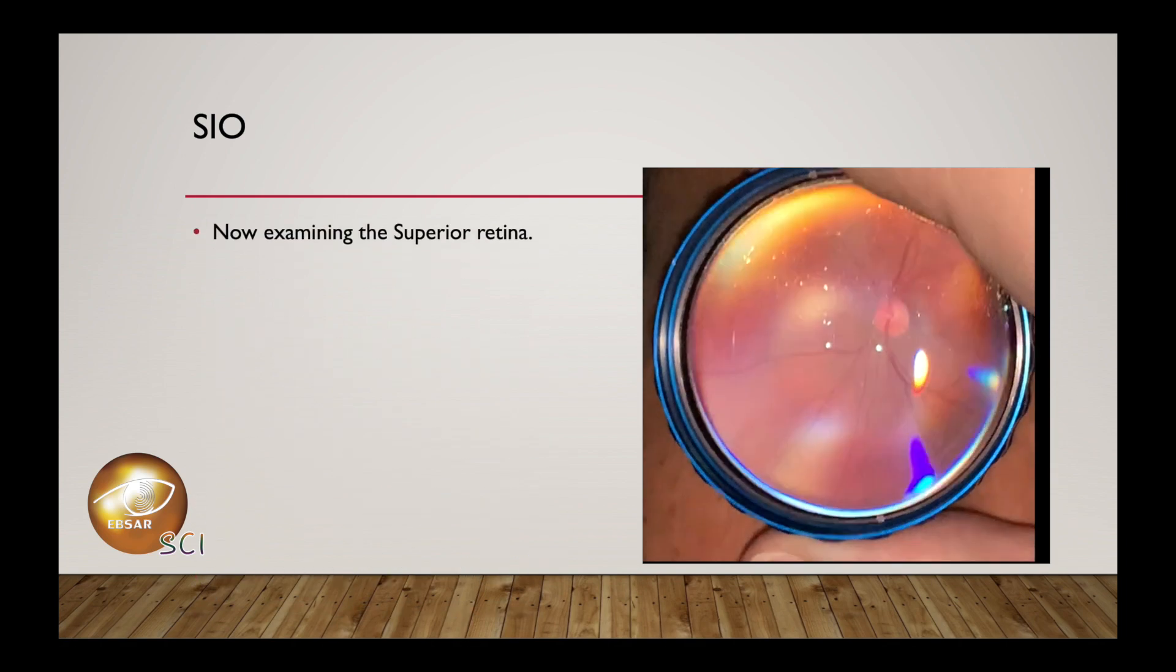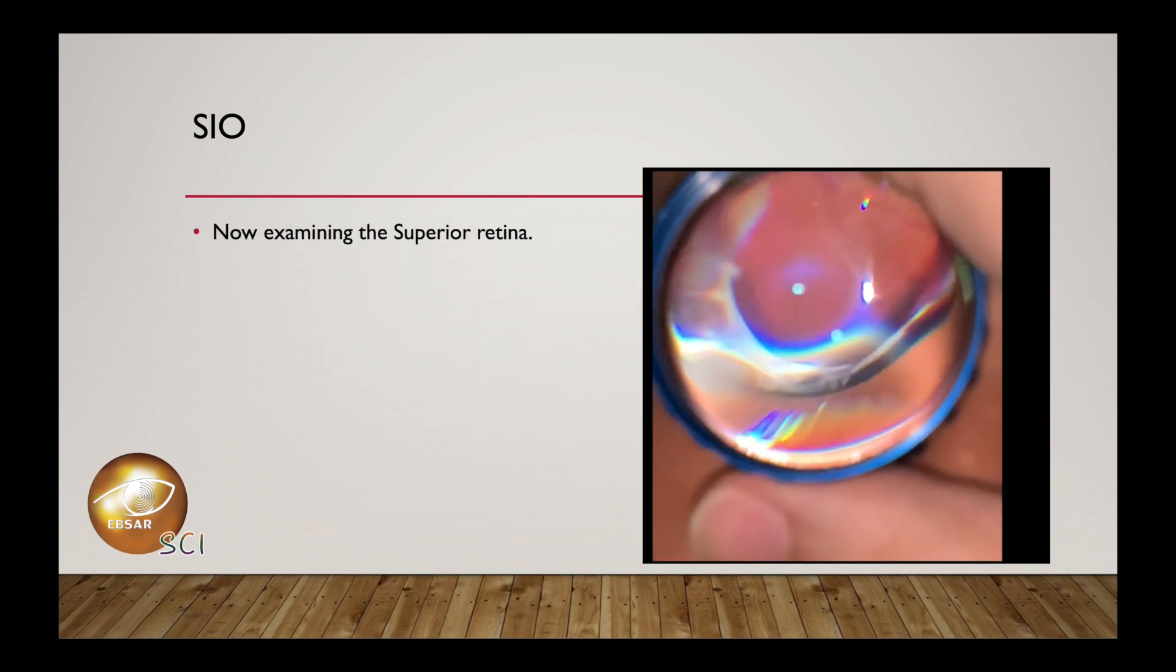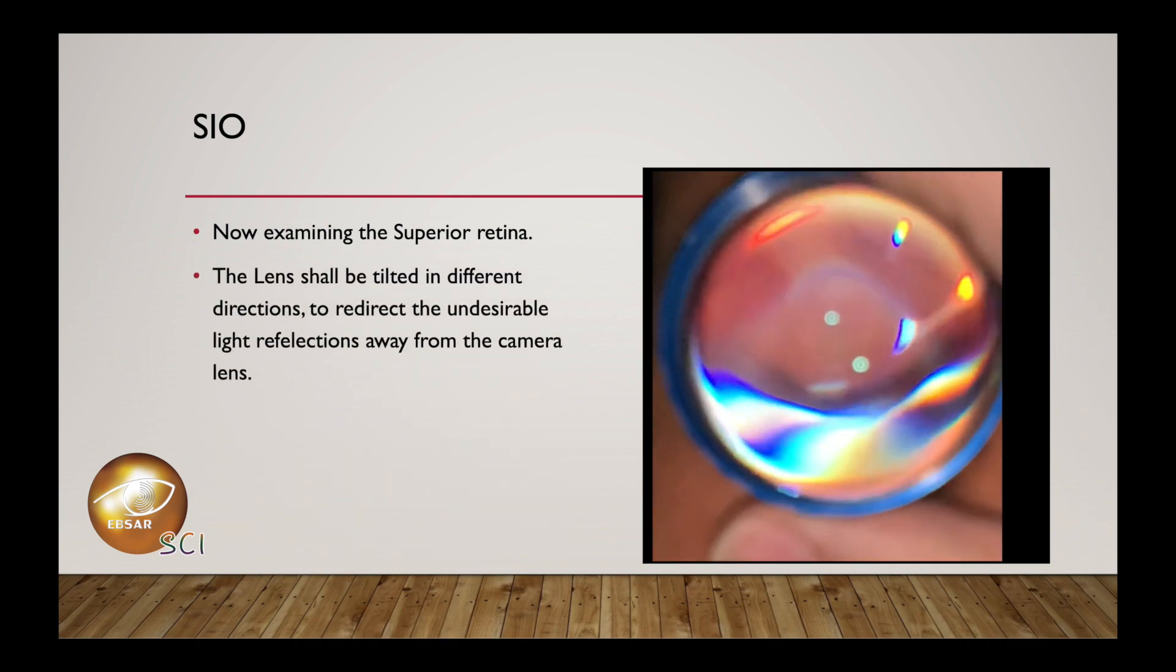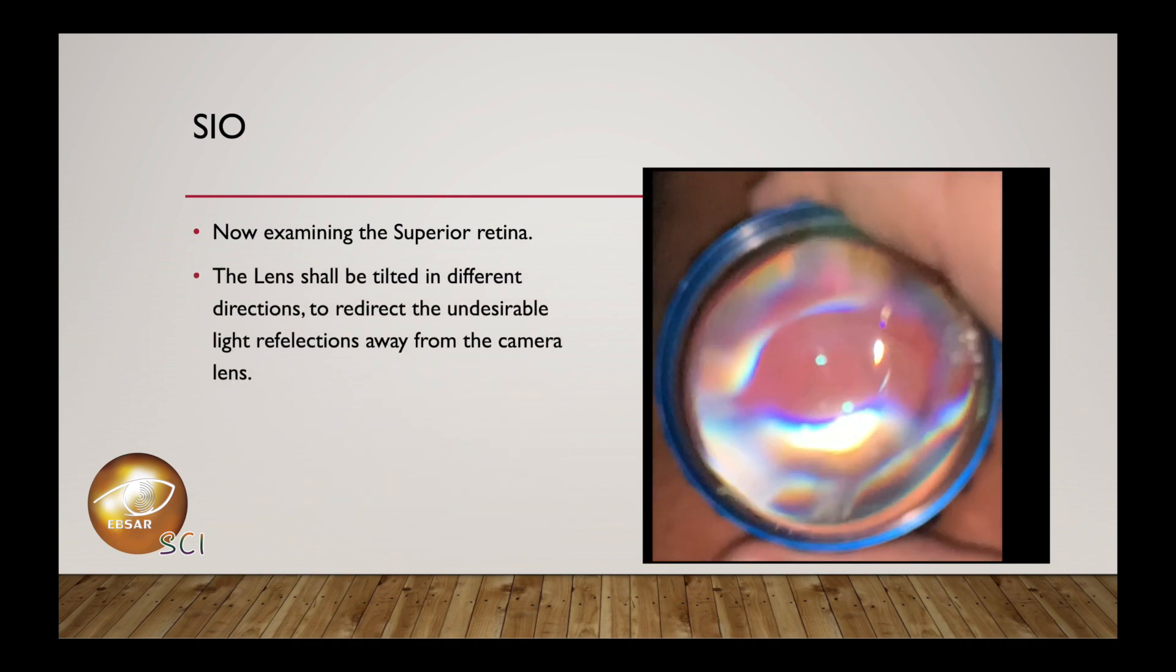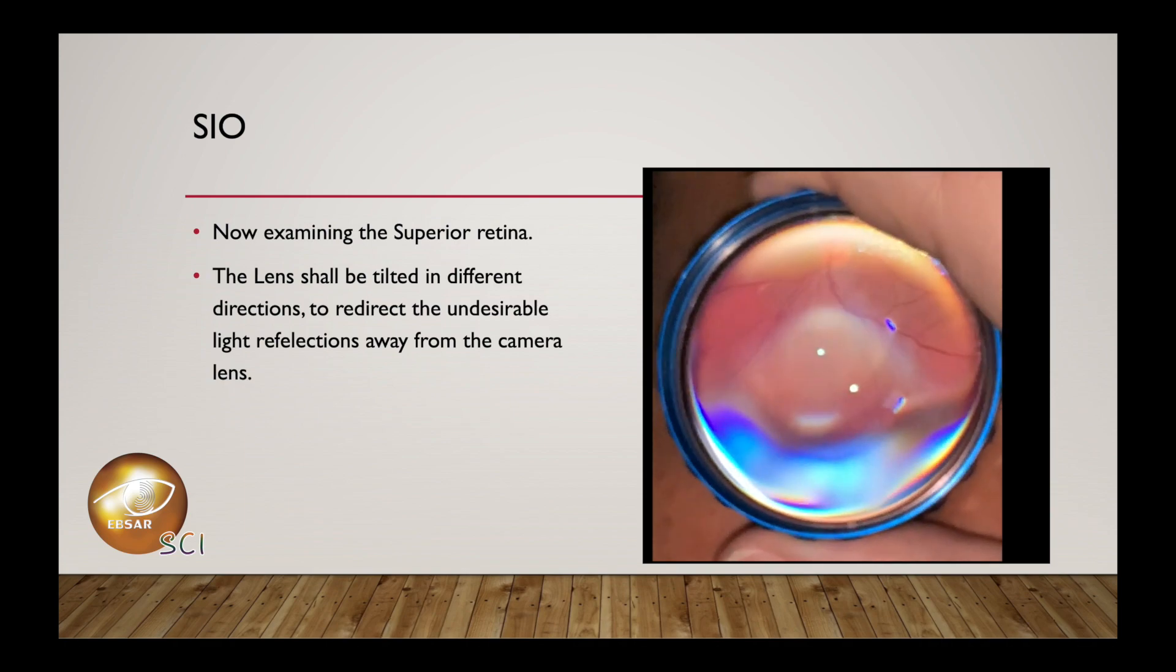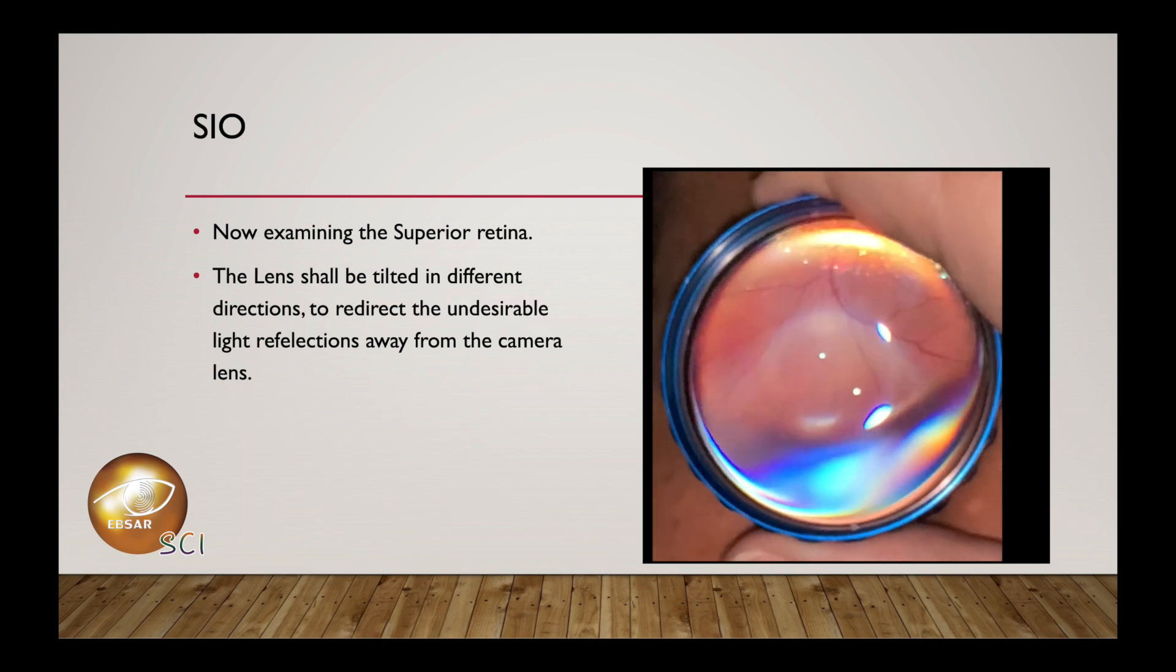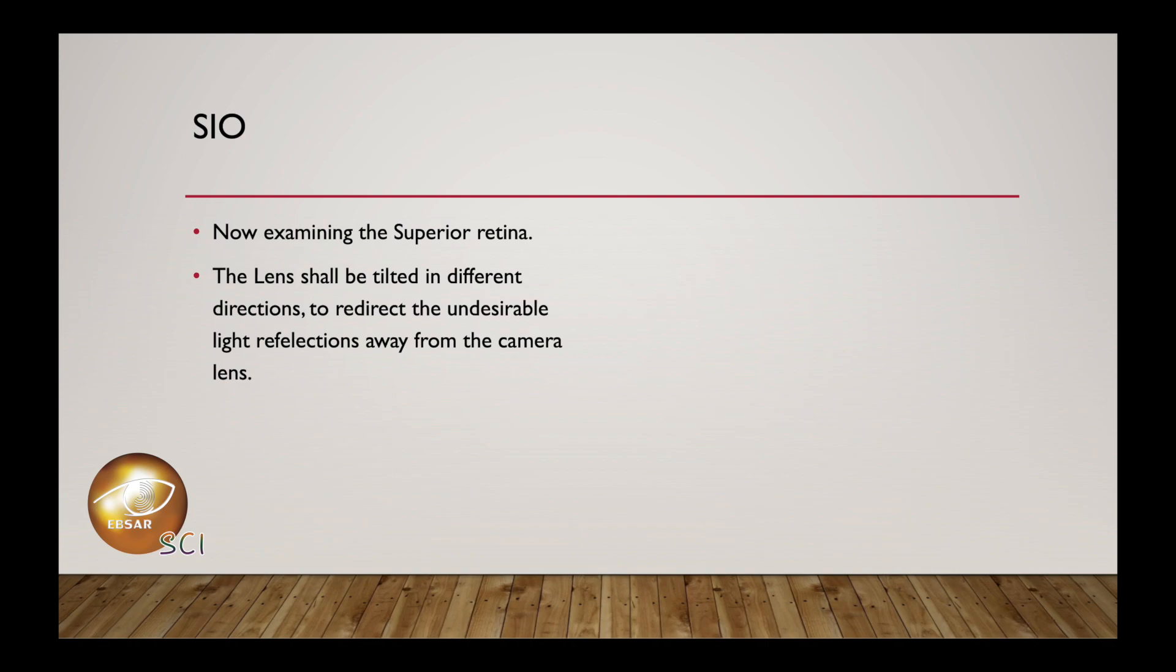Now examining the superior retina. The lens shall be tilted in different directions to redirect the undesirable light reflections away from the camera lens. As clarified here, each side should be brought front and back to adjust the lens reflections.